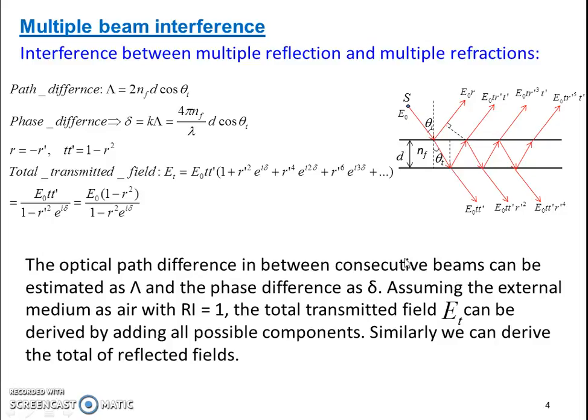Now we can easily estimate the path difference of these two consecutive beams. The path difference of these two consecutive beams can be represented by this length, which is one wave passing from here to here.